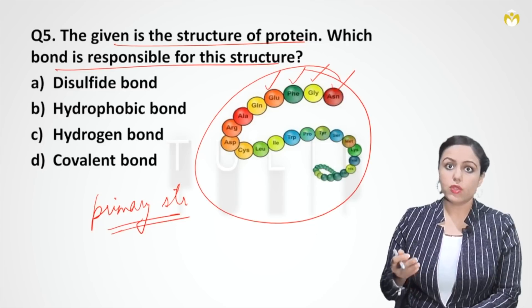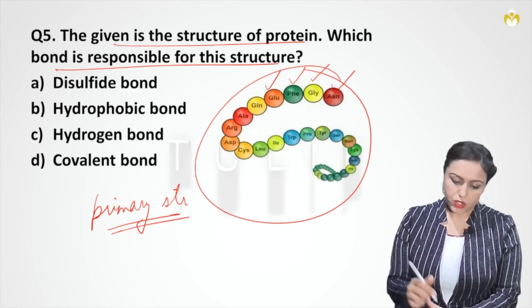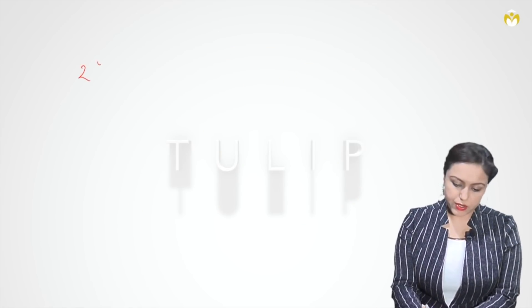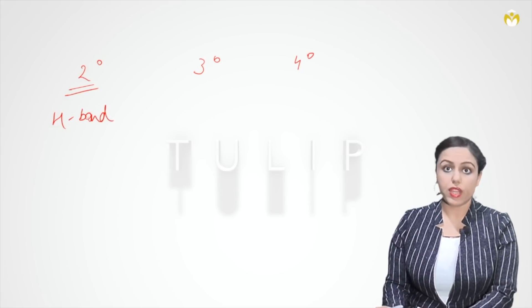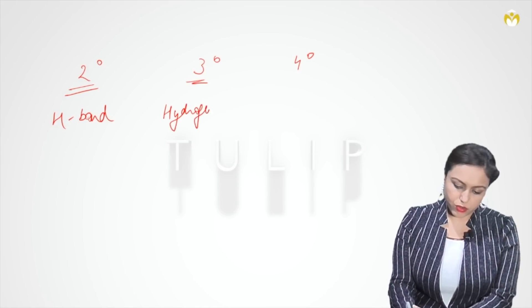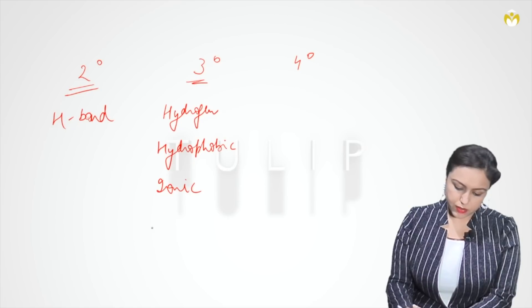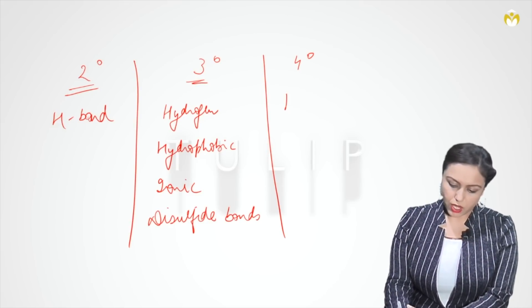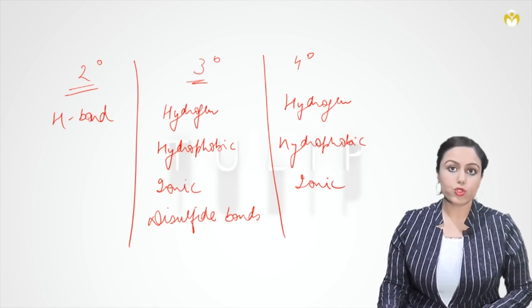The peptide bond is a strong covalent bond. That is why on denaturation, only the secondary, tertiary, and quaternary structures are lost, but the primary structure is retained due to these strong covalent bonds. In secondary structure, the bond is the hydrogen bond — alpha helices and beta sheets are stabilized by hydrogen bonds. In tertiary structure, we have hydrogen bonds, hydrophobic bonds, ionic bonds, and disulfide bonds. In quaternary structure, we have hydrogen, hydrophobic, and ionic bonds.